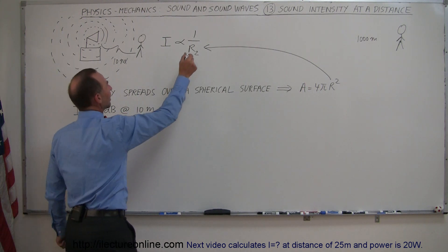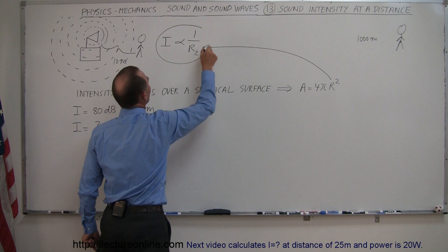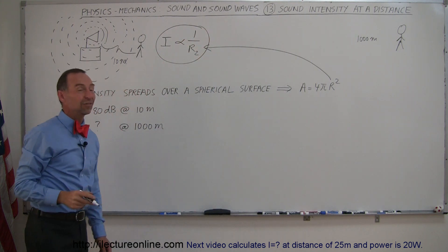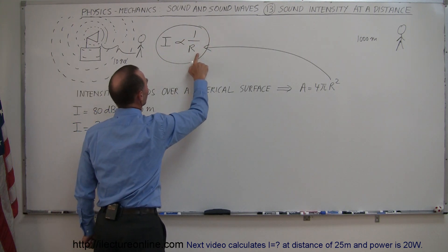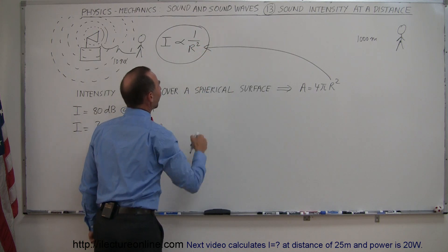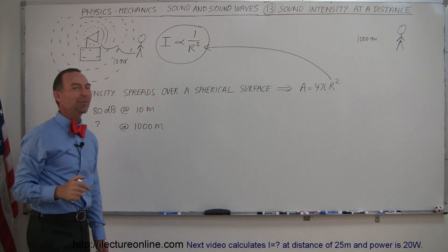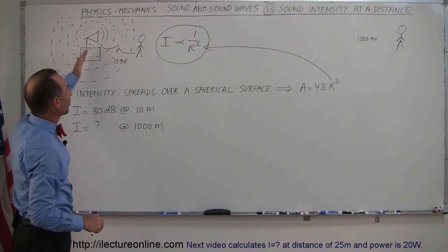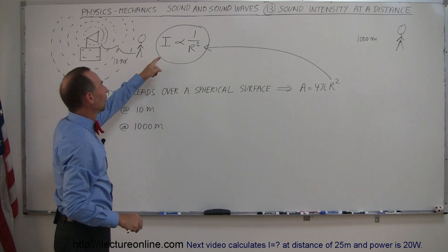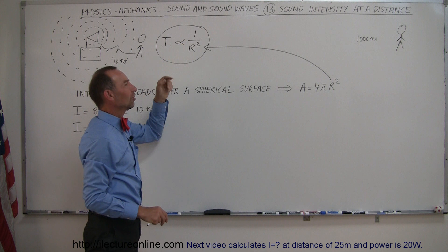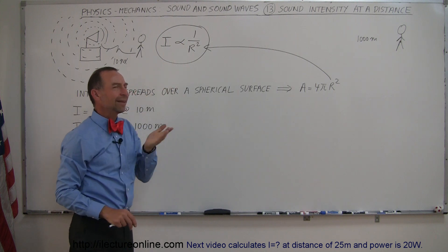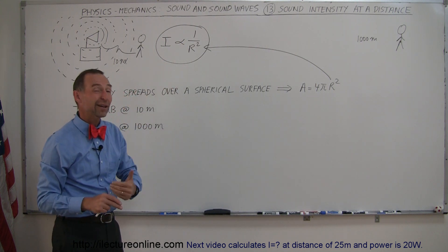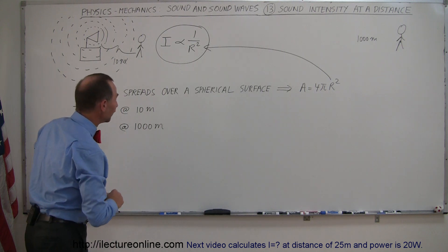It turns out that the sound intensity decreases proportionally to the inverse of the distance squared. So what that means is that if you go 10 times as far away, since intensity is proportional to 1 over distance squared, you square 10 to get 100 — it should only be 1/100 as loud in intensity.